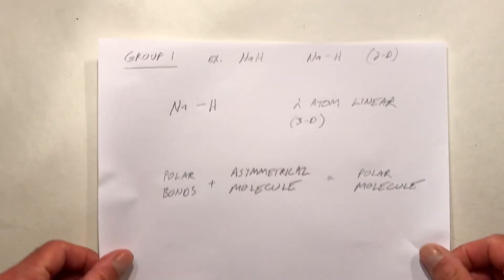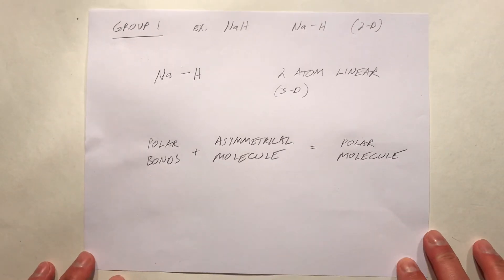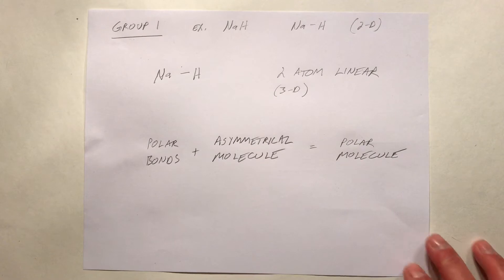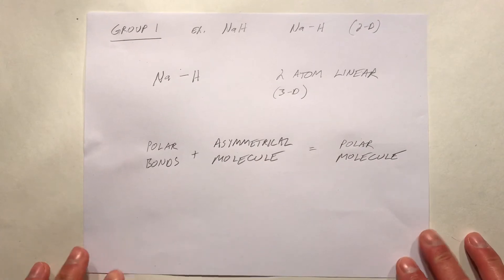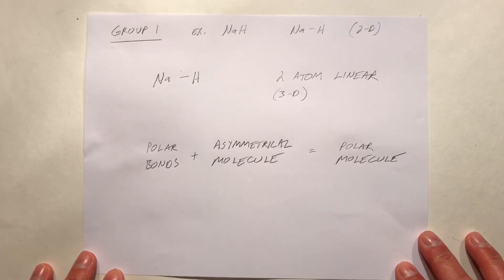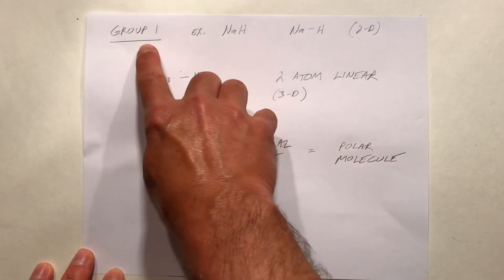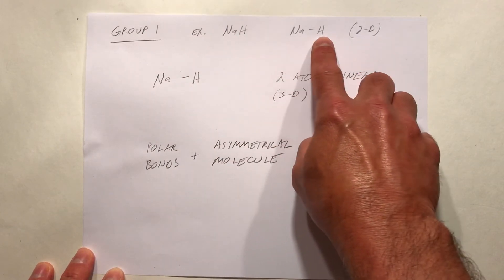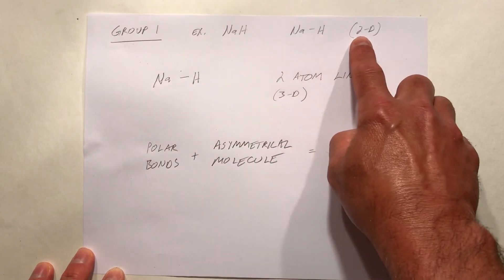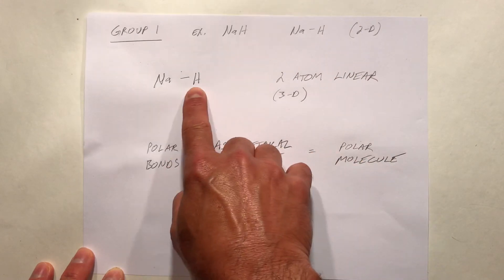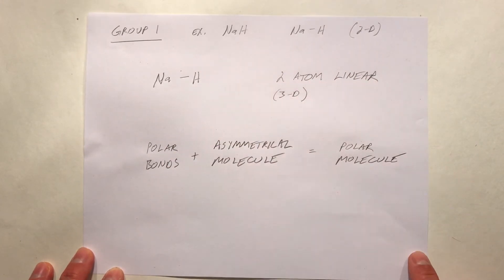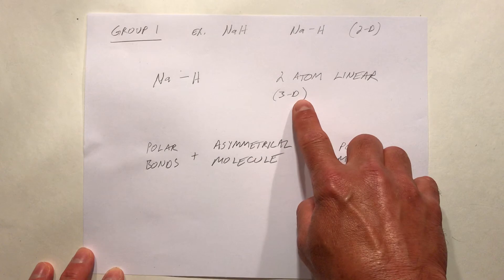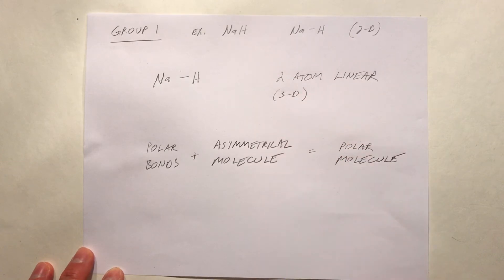Let's consider elements from different groups forming molecules. For a group 1 element, sodium bonded to hydrogen, we'd have this two-dimensional structure, and really the same structure in three dimensions — we'd call that a two-atom linear molecule.